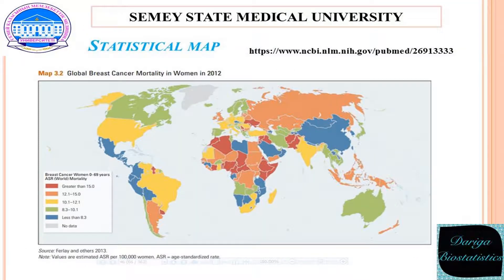Many maps portray statistical data. A statistical map presents numerical data superimposed on a map of the geographical units to which the data are related. The same data could also be presented in a table or a bar chart. The map image helps the reader associate the data more directly with specific geographic areas.